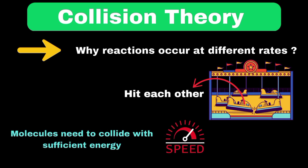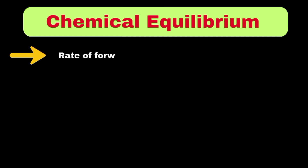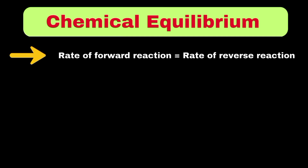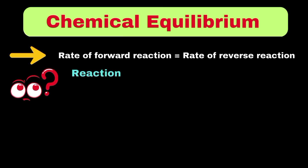Now we can move towards chemical equilibrium. Chemical equilibrium is the state where the rates of forward and reverse reactions become equal, resulting in no net change in the concentrations of reactants and products. To understand chemical equilibrium in detail, first we need to know what happens when reactions reach this balanced state.